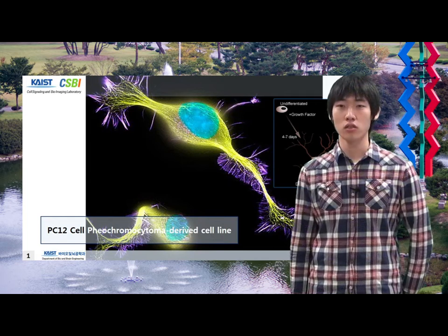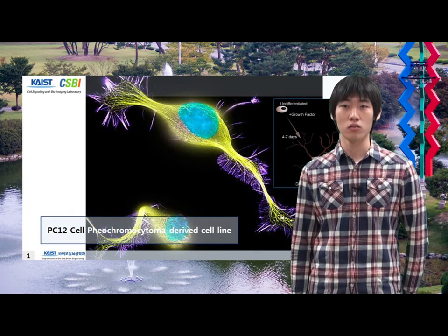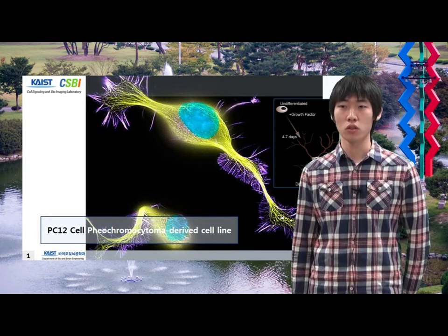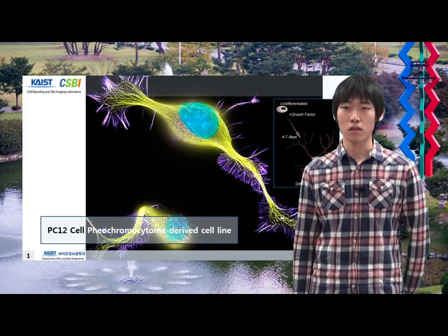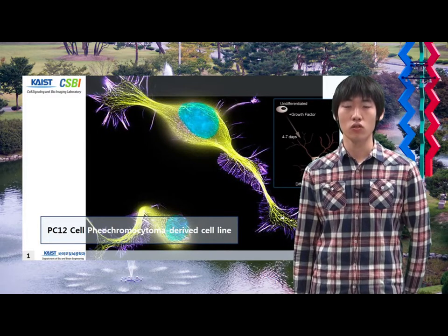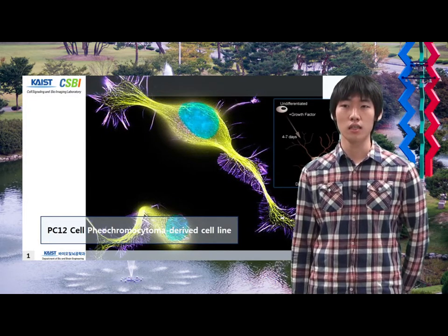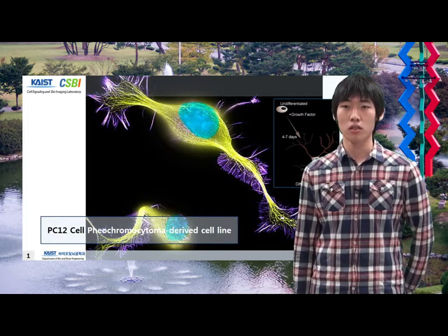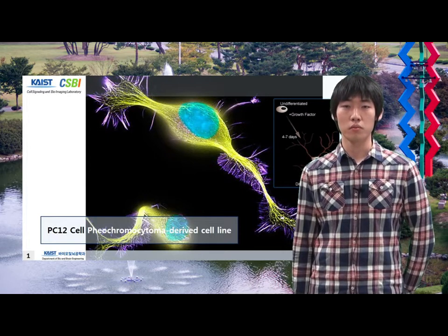This presentation is related to PC12 cells, which are an immortal cell line. They are from the cancerous tissue of the adrenal gland, but differ from other cancerous cells in that they have some very special properties.